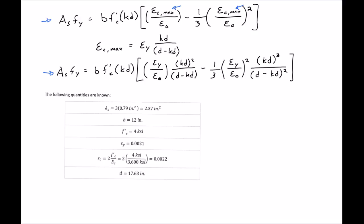With this expression we know all of the quantities except KD. So we know our area of steel, we know our Fy, we know our base width, our F prime C, epsilon y, our yield strength of the steel, and our strain at maximum stress. For our concrete, we know our D. So the only unknown is KD. So we can plug in all of our values and use whatever solver function you want to solve this expression. And we'll end up finding that our KD is equal to 6.52 inches.